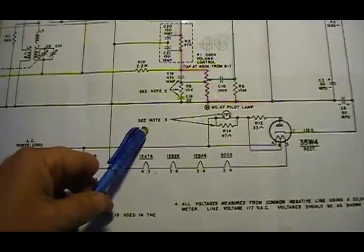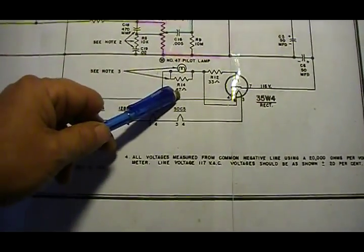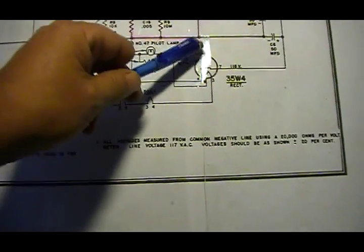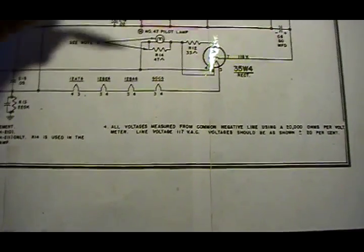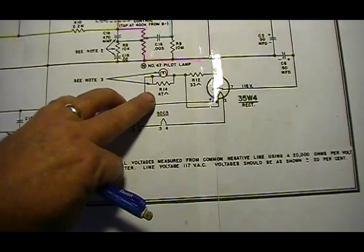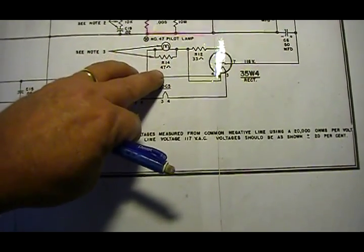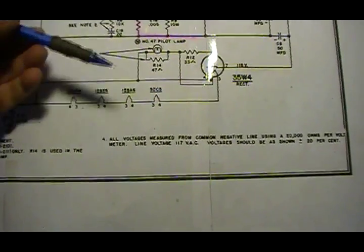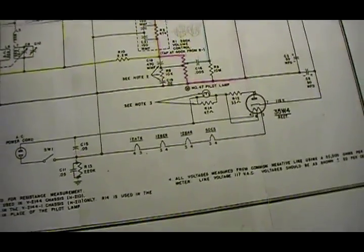You'll notice here it says Note 3. Note 3 talks about, since this schematic actually covers two different radios, it talks about the pilot light or this resistor. This resistor is also helping out with the shunting or reducing some of the input into the tube. What Note 3 basically says, if the radio has a pilot light, then the resistor is not necessary. But if the radio doesn't have a pilot light, then you have to put the resistor in. And evidently, I have not looked up the ratings on a 47 for sure for a long time, but evidently 47 ohms is pretty close to what that filament and that light bulb will be.